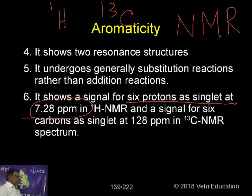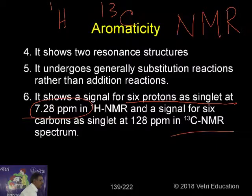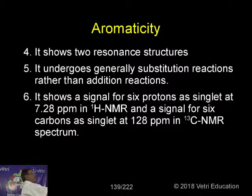If 7.28 ppm a singlet is there, 100% you can see it is a benzene. Or if any aromatic compound, between 6 to 8, if there is any signal, it is aromatic. The same way, if you go for C13-NMR, between 120 to 140, in the case of benzene, six carbon singlets at 120 ppm. Or any aromatic compound between 120 to 140, there will be that will be singlet, a signal that shows it is an aromatic compound.